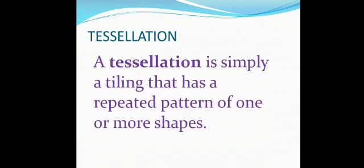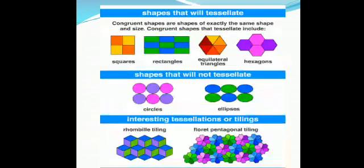Tessellation is simply a tiling that has a repeated pattern of one or more shapes. Shapes that will tessellate: squares, rectangles, equilateral triangles, hexagons. As you can see, there is no gap. Shapes that will not tessellate: circles, ellipses. You can see here some gap is there in between.